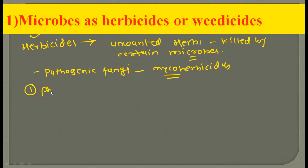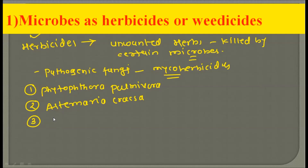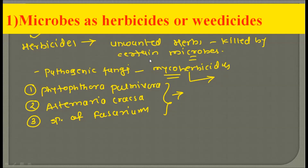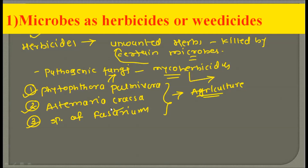The examples of mycoherbicides are: first, Phytophthora palmivora; second, Alternaria crassa; and third, species of Fusarium. All three of these fungi are used as mycoherbicides to kill unwanted herbs in the agricultural field. They are considered herbicides or weedicides in agriculture, and you should remember at least one or two examples to avoid the unwanted development of weeds.